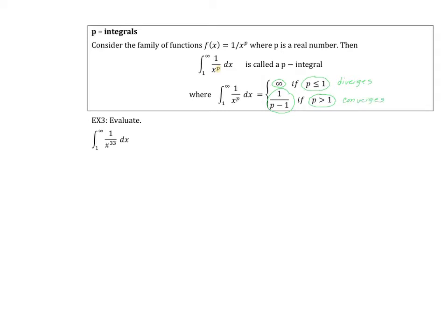In example three, we have a p-integral where p equals 33, which is clearly greater than 1. So we know immediately it converges, and it converges to 1 over 33 minus 1, which is 1 over 32. If you have a p-integral, you get convergence or divergence right away without computing the whole integral.